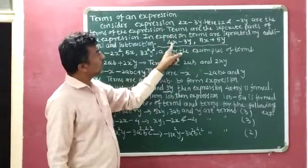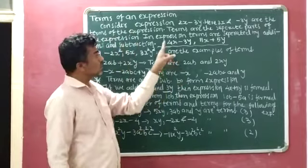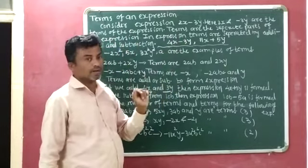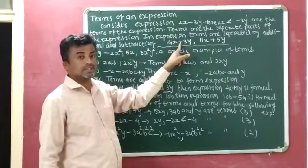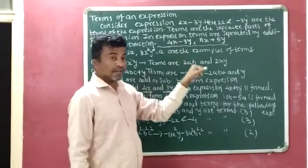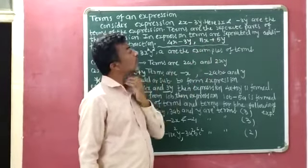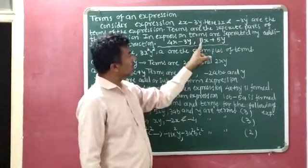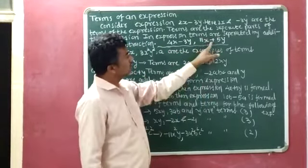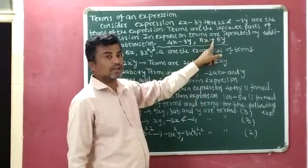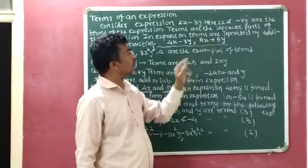Second example: 4x minus 3y. In 4x minus 3y, there are two terms — 4x and minus 3y — and both are separated by subtraction, as the minus sign is present. Next example: 11x plus 5y. In 11x plus 5y, there are two terms — 11x and 5y — and both terms are separated by addition, as the addition sign is present.